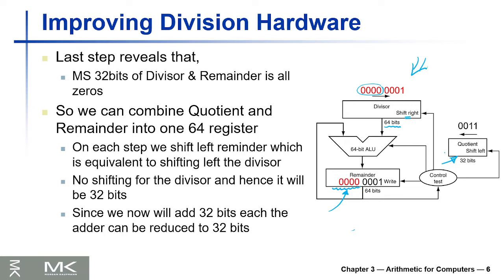The main idea and motivation is to combine the quotient into the remainder register. It shouldn't really be called the remainder anymore, although they still call it that, because this 64-bit register will contain both the quotient and the remainder at the same time. The left half will be the remainder and the right half at the end of the operation will be the quotient.